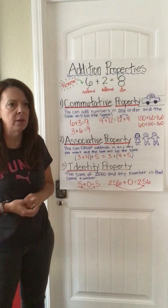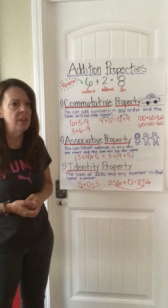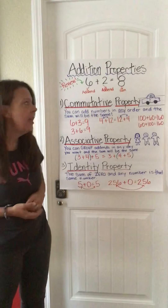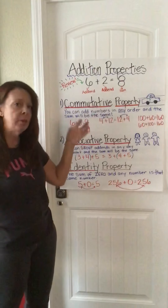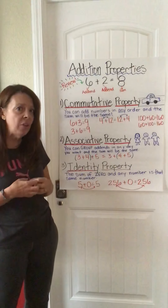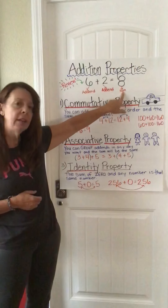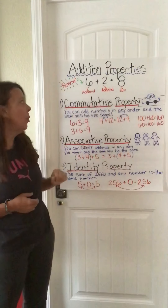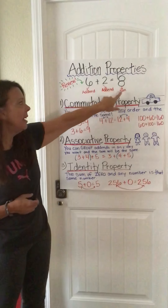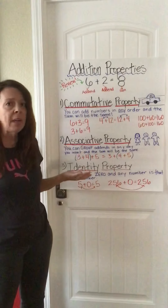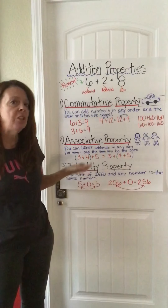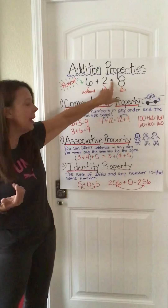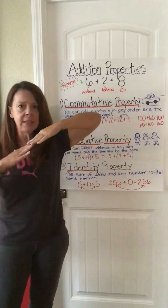Can you say that word? Addends. The numbers you are adding together are called the addends. The number that you get when you put those addends together is called the sum. Can you say that, boys and girls? The sum. So these are the addends and this is the sum, and you always want to keep the equation balanced.